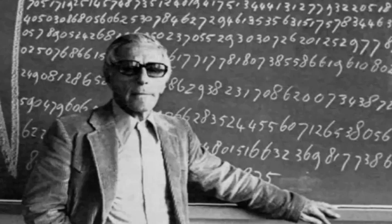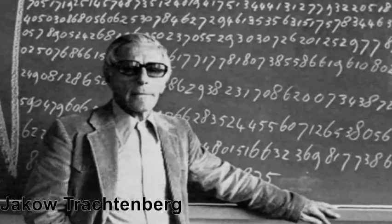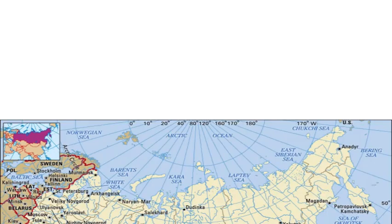Friends, today we will see the Trachtenberg method of Speed Mathematics. Who is Trachtenberg? His actual name was Jakov Trachtenberg. He was a Russian Jew, born in Odessa, which is now in Russia, in the year 1888. He lived up to 1953.